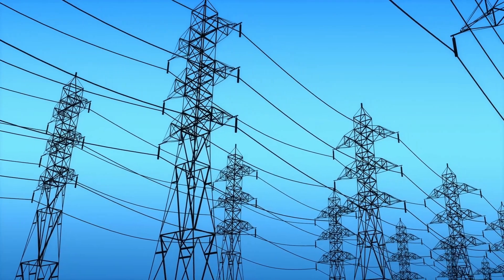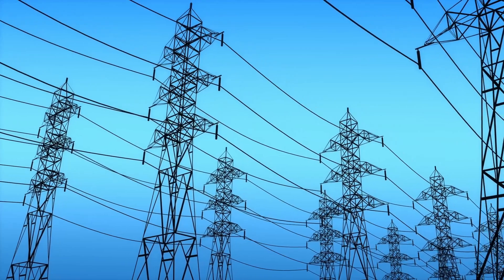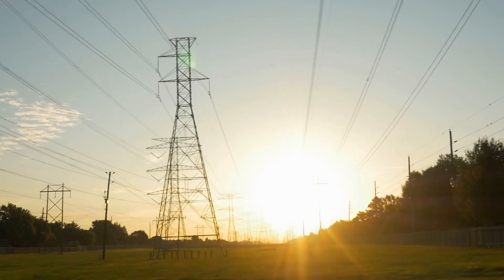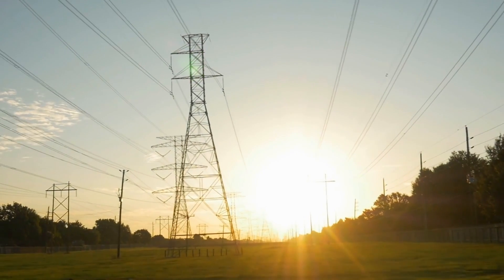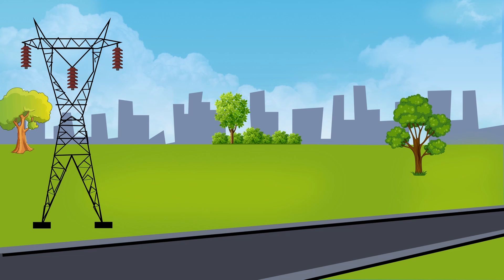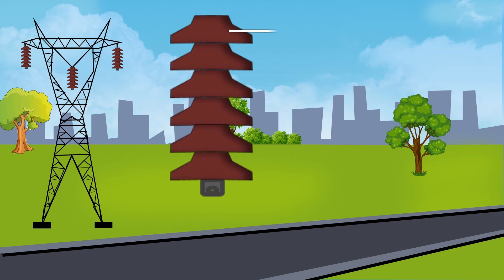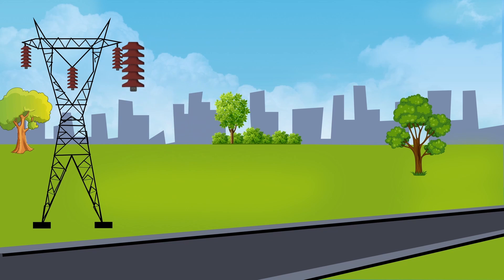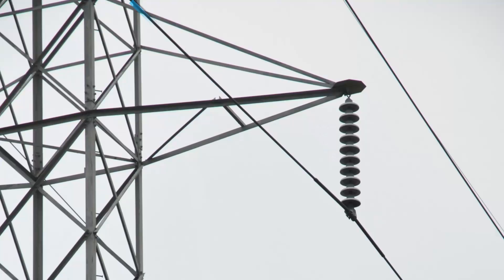As mentioned earlier, beyond 33 kV we cannot use pin type insulators. So, for high voltages, suspension type insulators are used. They are generally used with steel towers. A suspension type insulator consists of several insulator discs connected in series by metal links in the form of a string.